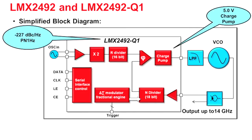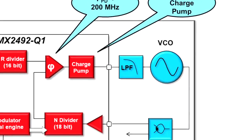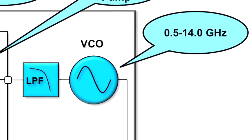The performance of that PLL is excellent at minus 227 dBc per Hz. The input reference can go up to 1200 MHz, and the phase detector frequency for higher performance can go up to 200 MHz. As far as the VCO is concerned, the range is from 500 MHz to 14 GHz.